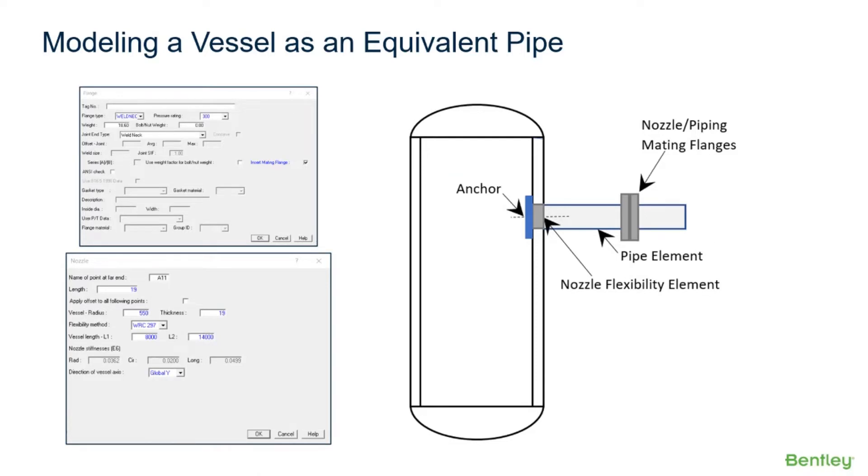The nozzle should be modeled as accurately as possible using flanges if necessary, a pipe run for the protruding length of the nozzle, and the nozzle flexibility element to represent the flexibility of the vessel wall.